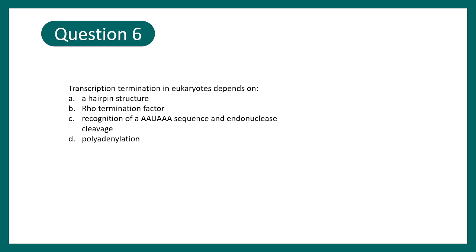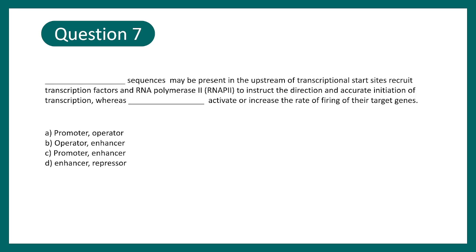Question number 6. Transcription termination in eukaryotes depends on a hairpin structure, rho-dependent termination factor, recognition of AAU triple A sequence and endonucleus cleavage, or polyadenylation. Here, the correct option would be option C. Right? If you want to learn more about it, everything is provided in the I button. The whole playlist is provided.